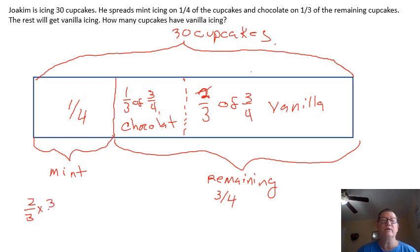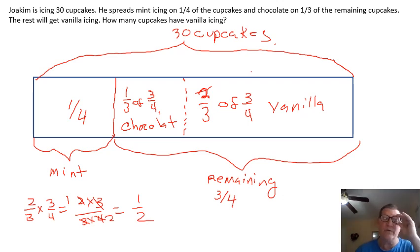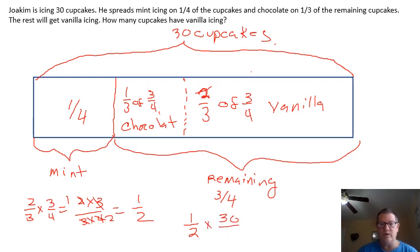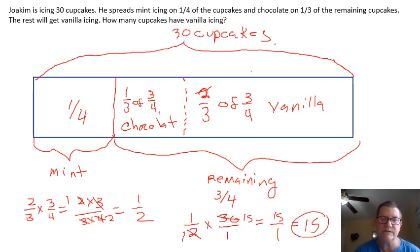Two-thirds times three-fourths equals two times three over three times four. I can take my threes out, and two goes into two one time, two goes into four two times, so I end up with one-half. One-half of all the cookies got vanilla. So one-half times 30 cupcakes over one — two goes into two one time, two goes into 30 fifteen times — equals 15 over one, which equals 15 cupcakes. So 15 cupcakes got vanilla frosting.